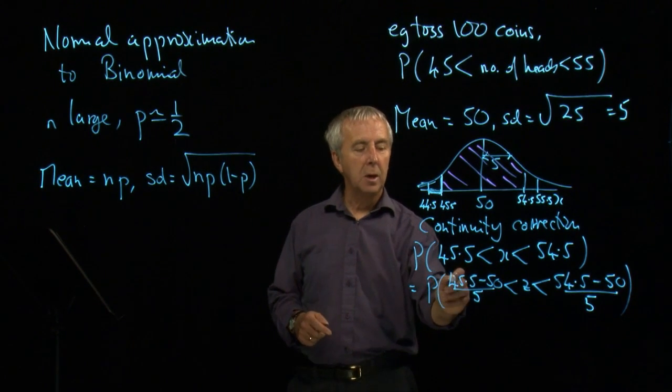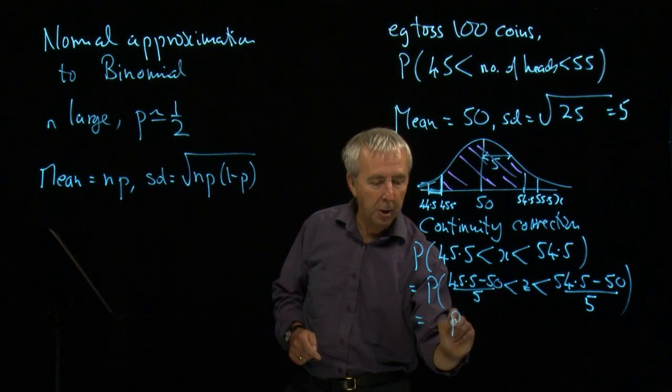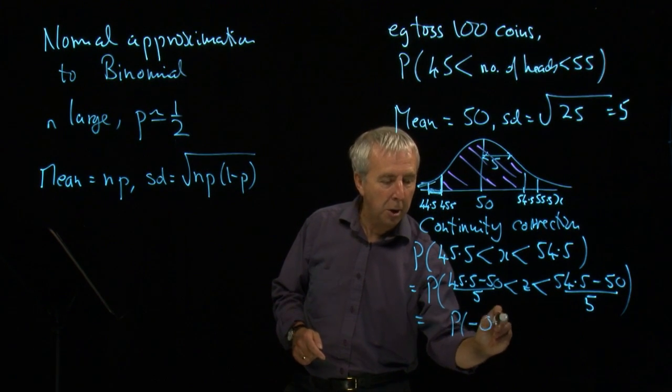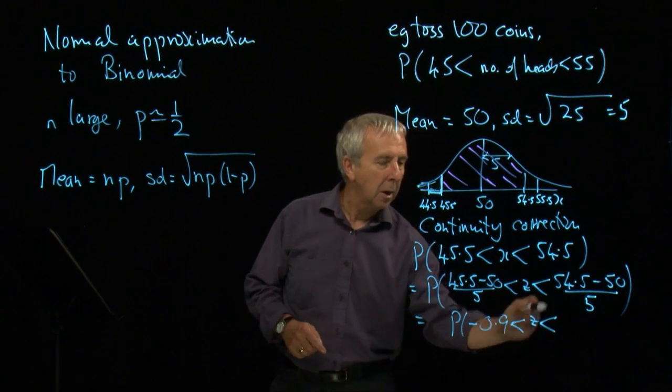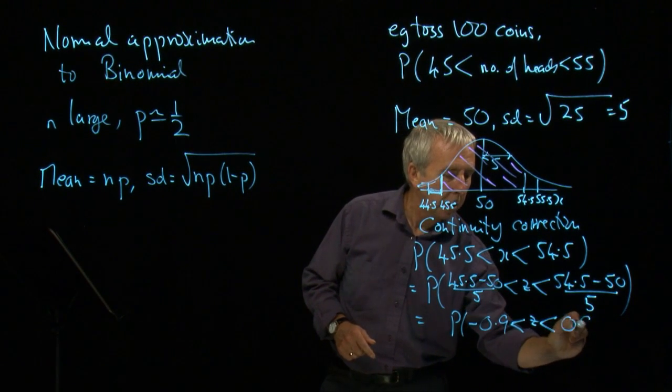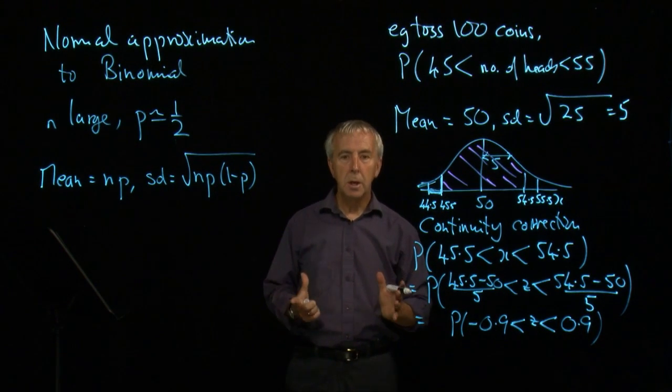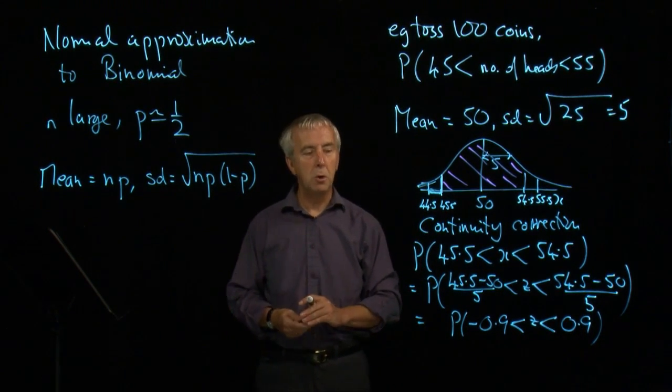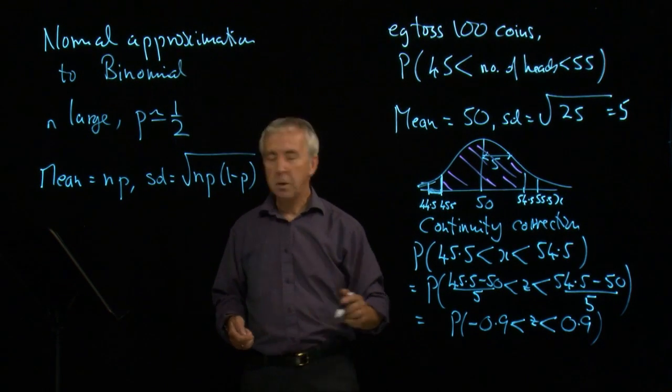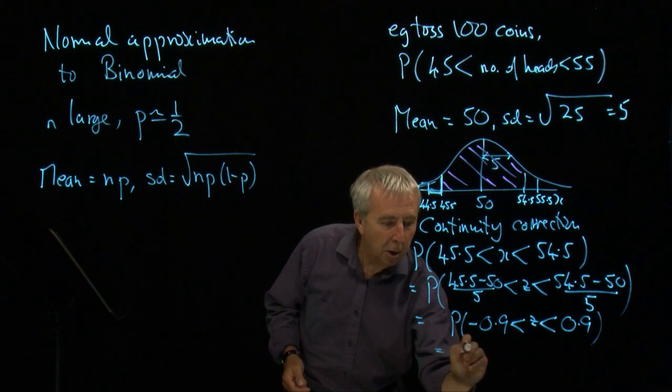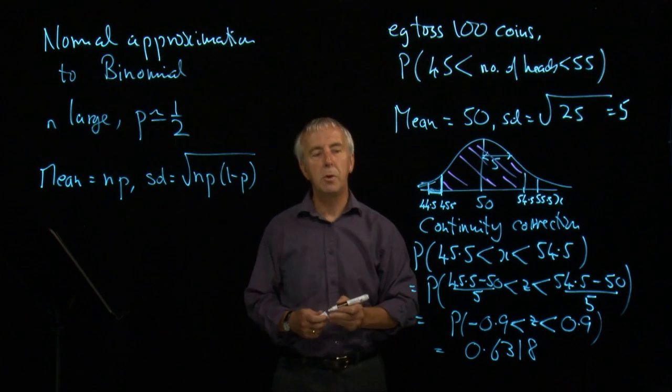That gives me minus 4.5 over 5. So that's the probability of minus 0.9 is less than z. And this is plus 0.9. So I've now reduced it to an exercise using the standard normal distribution tables. And if I look these up, it comes in at 0.6318, just over 63%.